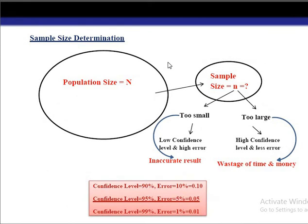The next important question is: what is the sample size, and what sample size should we select for a study? Population size is generally denoted by capital N and sample size by small n. If we select a very small sample size, we cannot make inference about the population correctly, because our sample doesn't have sufficient information for making inference. Whatever inference we draw will not be correct, and we have very low confidence and very high chances of error.